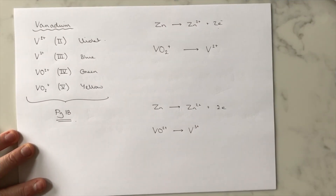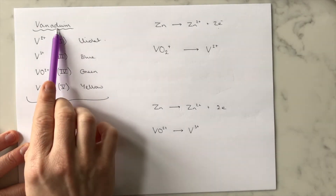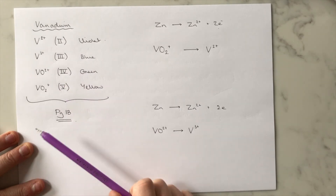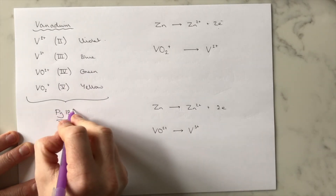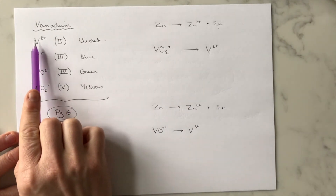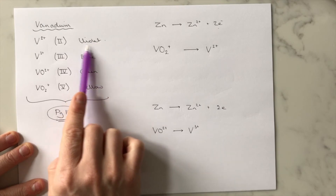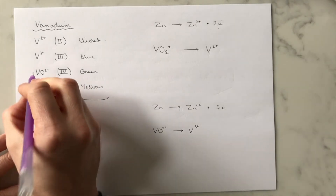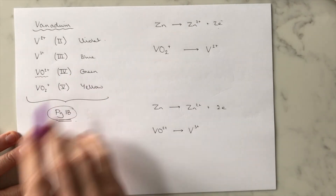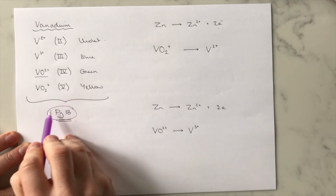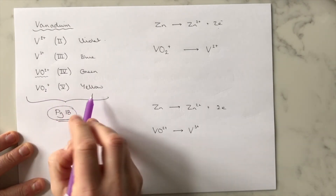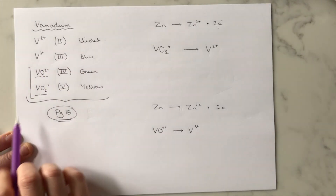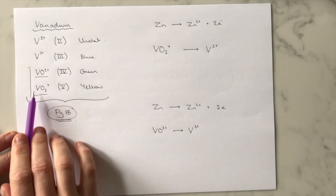The final example of variable oxidation states is vanadium. Vanadium can exist in +2, +3, +4 or +5 oxidation states. These are on page 18 of your note pack: vanadium in +2 is violet; in +3 it is blue; in +4 it is VO²⁺ and that's green; and in +5 it is VO₂⁺, which is yellow. Don't get VO²⁺ and VO₂⁺ mixed up — make sure you're clear on those.